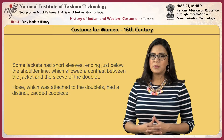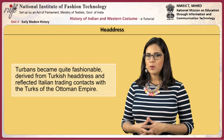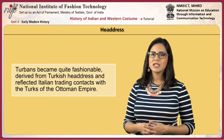Women wore the camicia, cut high to show above the neckline of the gown to form a small border. It was often embroidered and finished with a small neckline ruffle. Dress silhouettes grew wider and fuller. Bodices became more rigid, a reflection of the increasing Spanish influence. V-shapes in the front gradually began to appear. Turbans became quite fashionable; they were derived from Turkish headdress and reflected Italian trading contacts with the Turks of the Ottoman Empire.